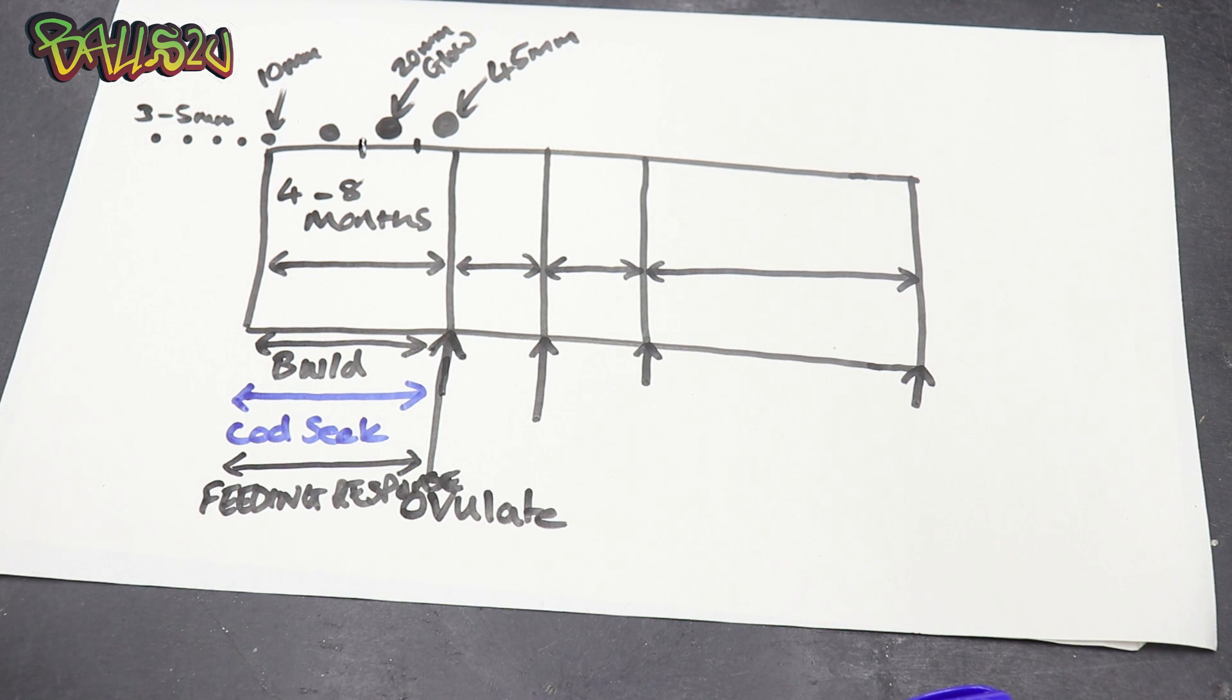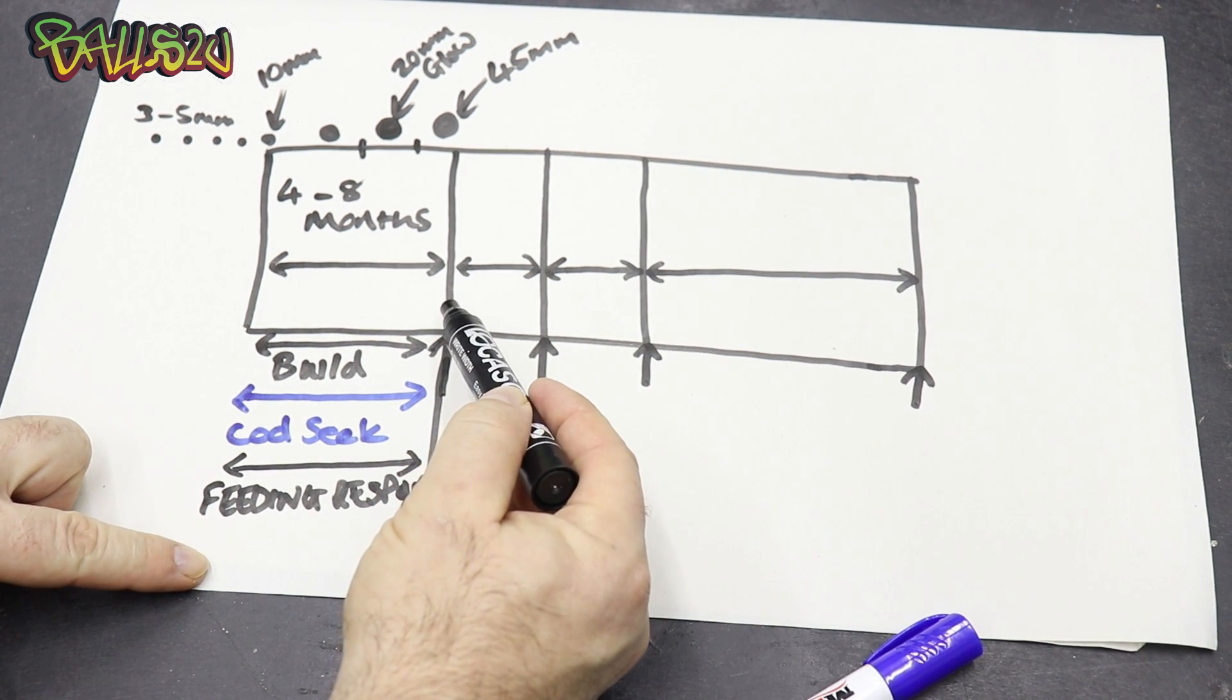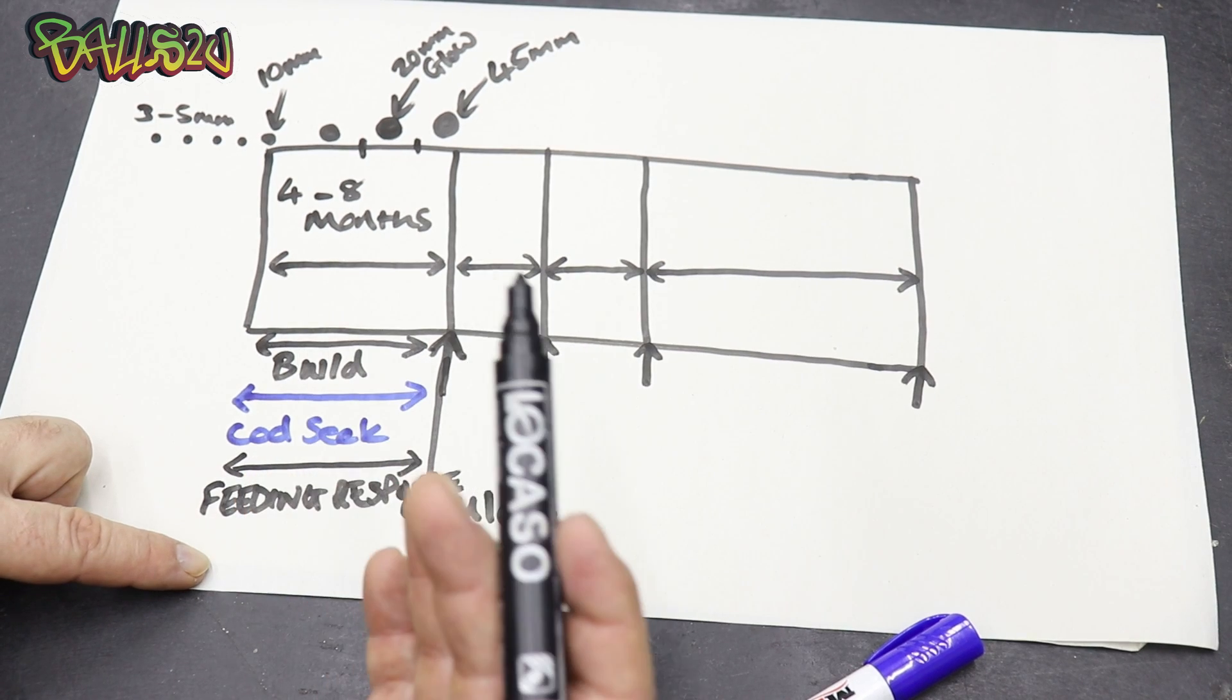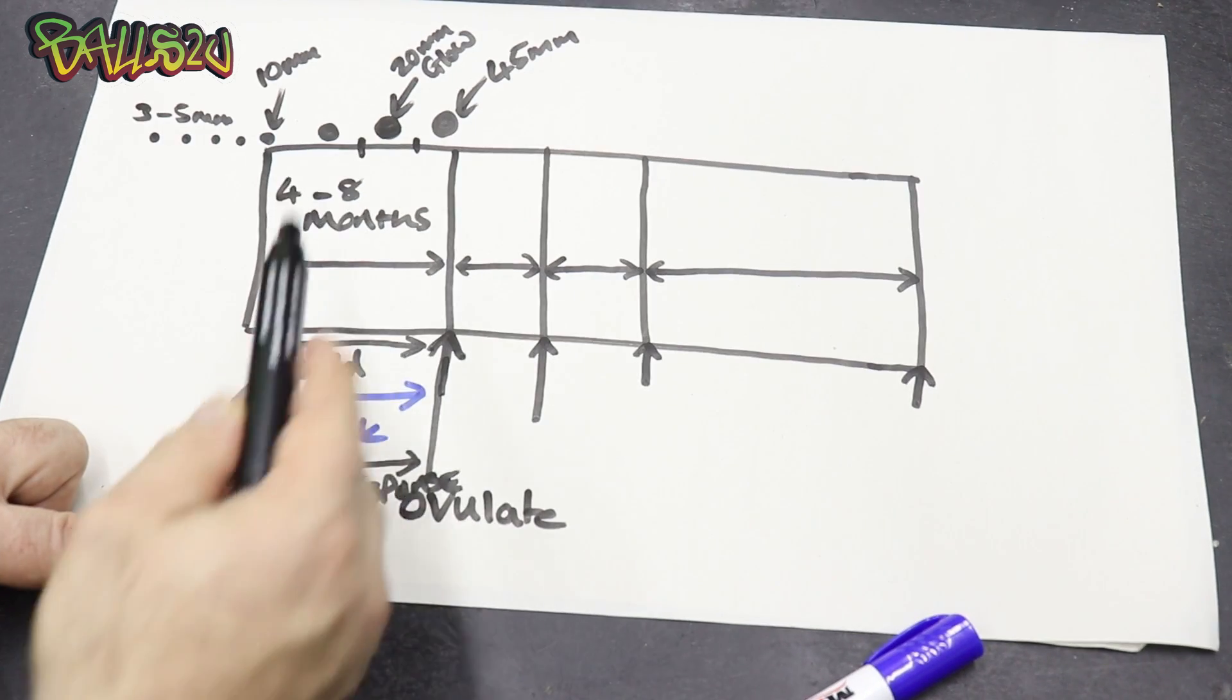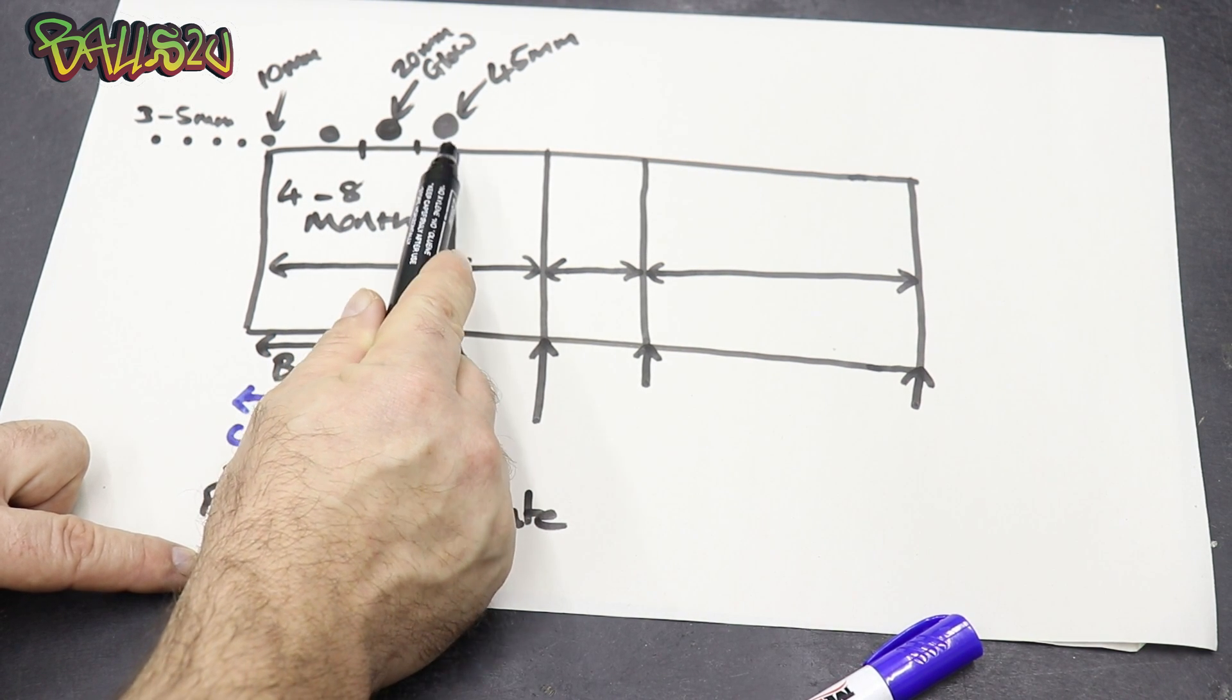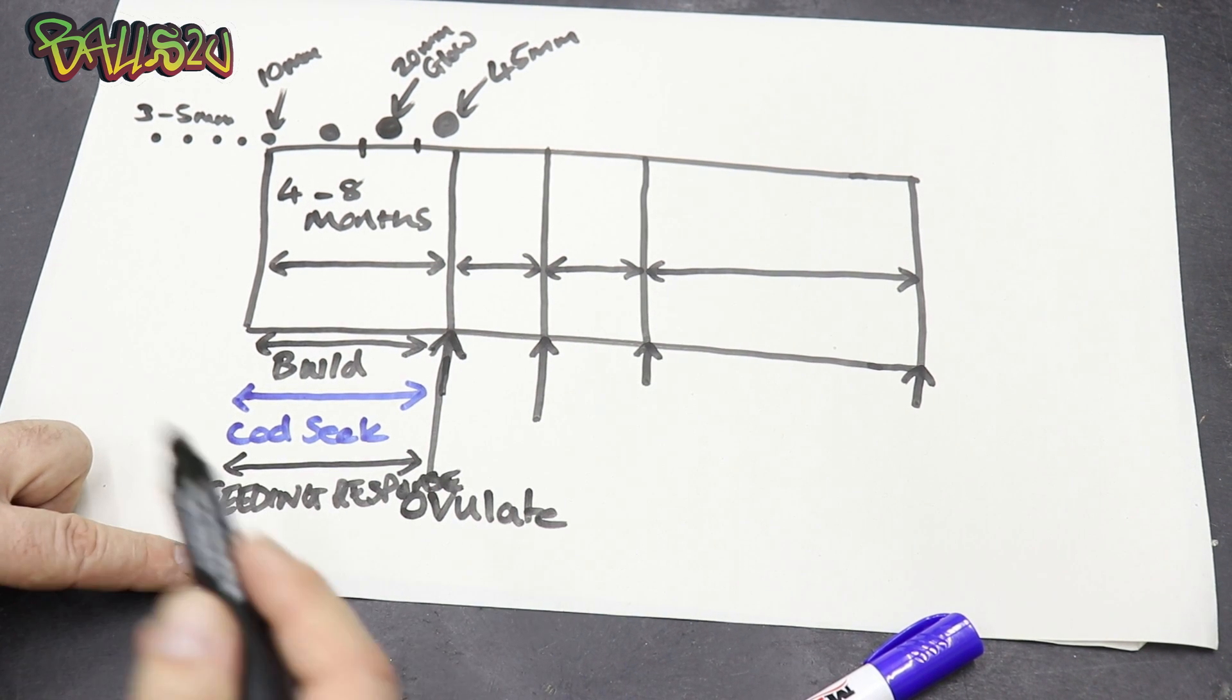Again, don't confuse the building stage with an ovulation. You will see an ovulation and you will know the difference. So call seeking, an increasing feeding response, but you will also notice when a female gets to this stage she may go off food as well. That's nothing to worry about; that's just pretty standard. That part of the breeding cycle pretty much nailed down. What we're going to have here, this is going to be our ovulation stage. The ovulation will probably last around about 24 hours, and that's why during these cycles when a female is close to 20 millimeters and coming up to 45 millimeters, I will check on those females every day, every night.